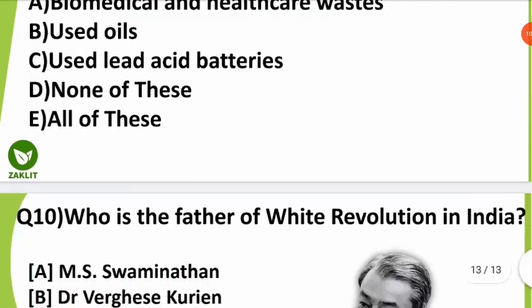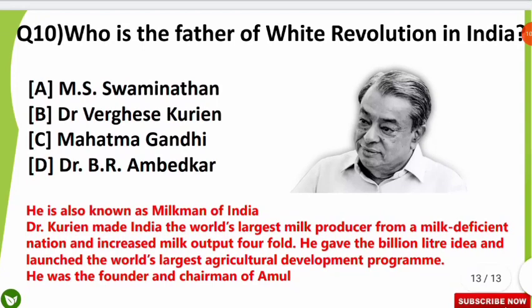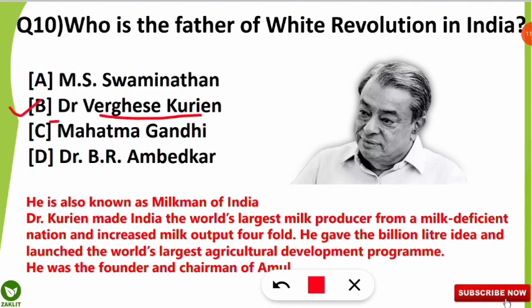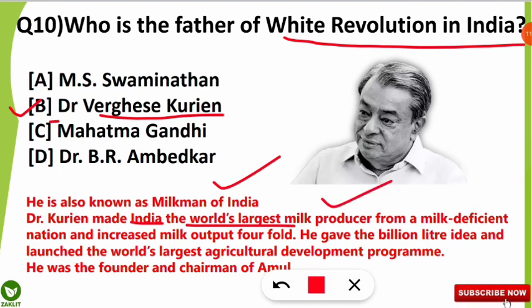The tenth and final question was: who is known as the Father of the White Revolution in India? The correct option is option B — Dr. Verghese Kurien is known as the Father of the White Revolution in India. He is also known as the Milkman of India. He was a very successful entrepreneur who made India the world's largest milk producer from a milk-deficient nation.